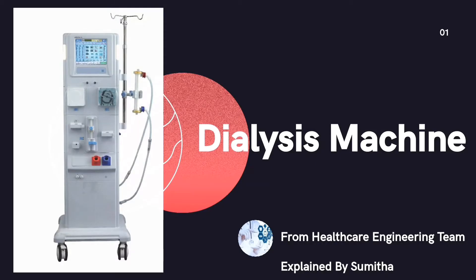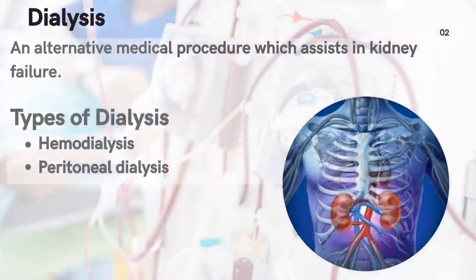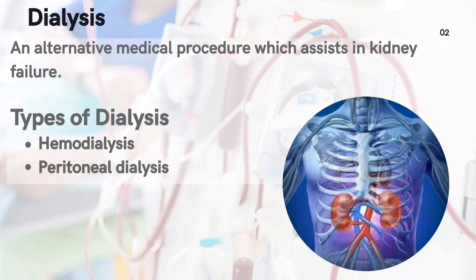I once again welcome you all before entering into the presentation on dialysis machine. Before knowing about the process of dialysis, let us see the functions of the kidney. A normal kidney performs both filtration and cleaning processes in the human body. It filters impurities from the blood and removes extra toxins, excess water, and other chemicals. The kidney also helps in regulating blood pressure and elements like sodium, potassium, and bicarbonate, and it also provides vitamin D.